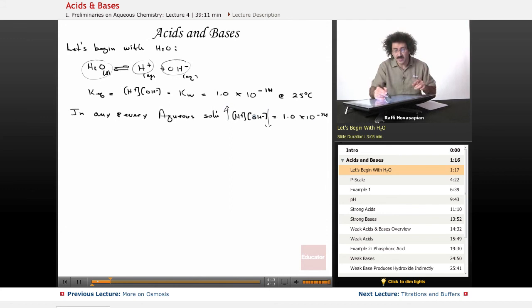The particular values of the individual species involved in the constant, they might change, but their product doesn't change. So if one goes up, the other has to go down.